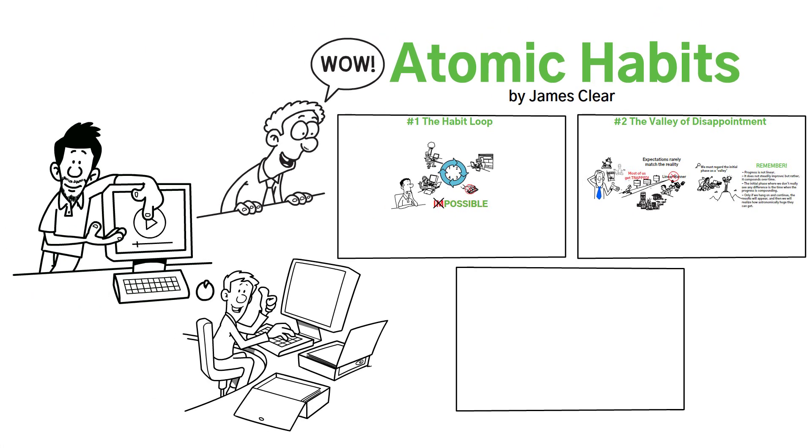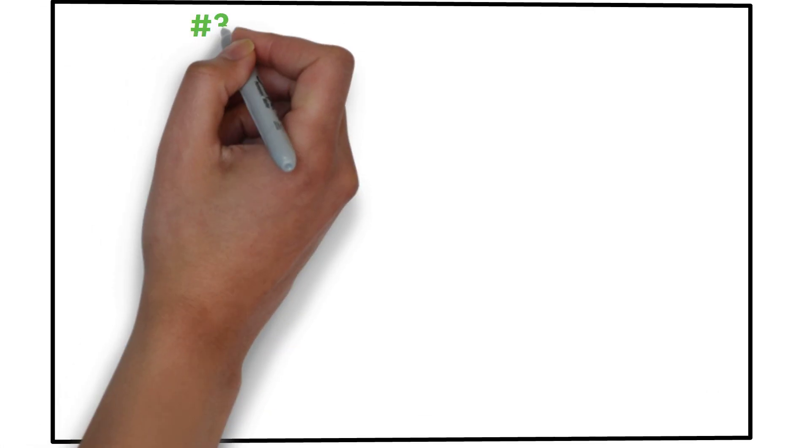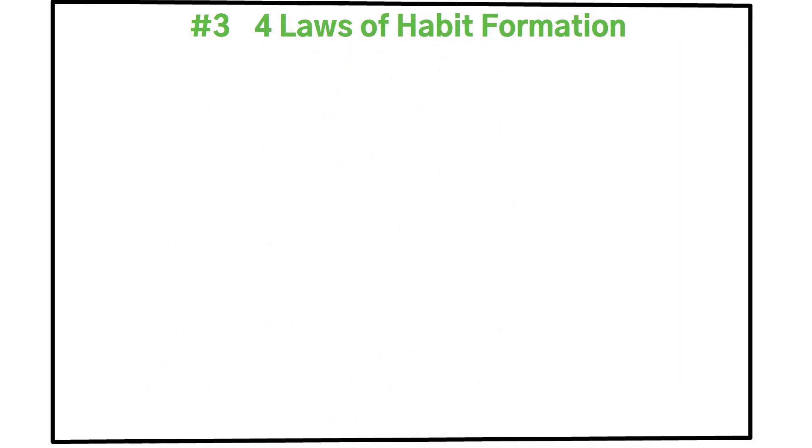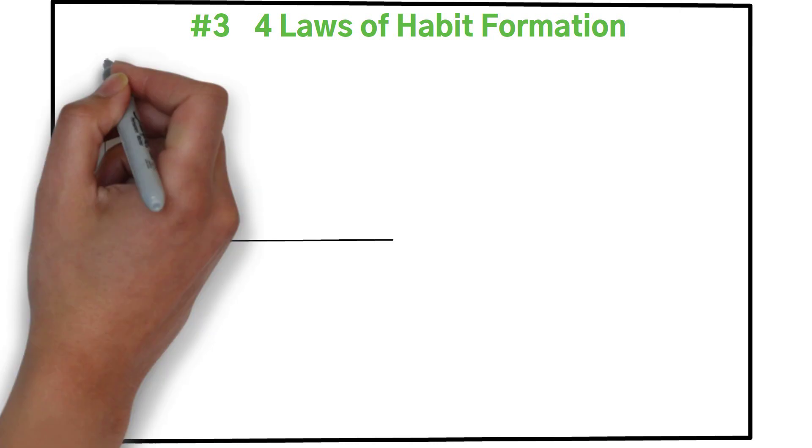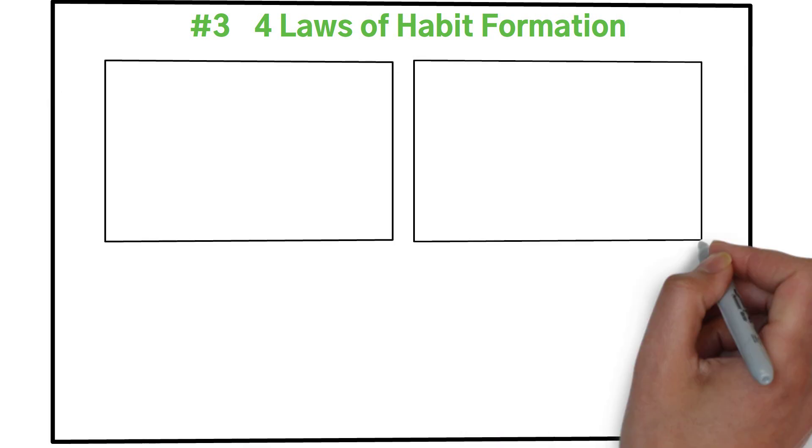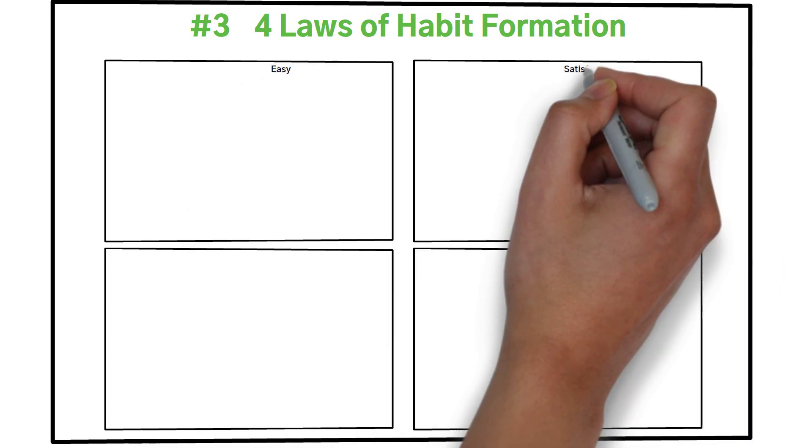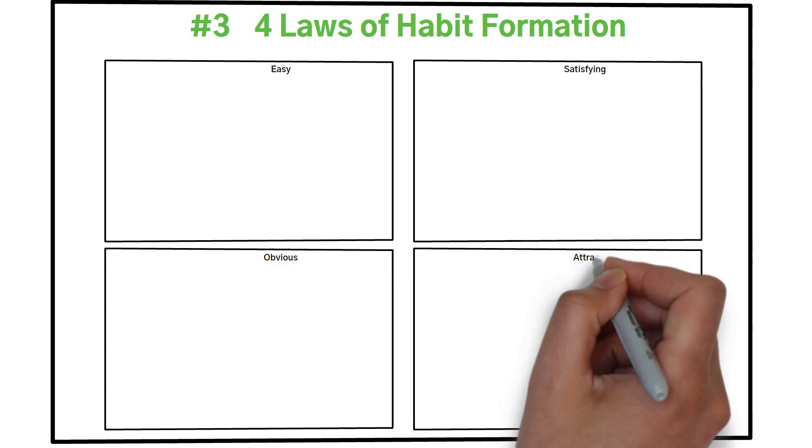Now let's get into the fundamentals of habit formation to build good habits and break the bad ones. That is idea number three. Idea number three is the four laws of habit formation. As per James Clear, there are four broad categories through which we can successfully make changes in our habits. We have to ensure that the act of changing the habits are easy, satisfying, obvious, and attractive. Now let's look at how we can implement these factors.